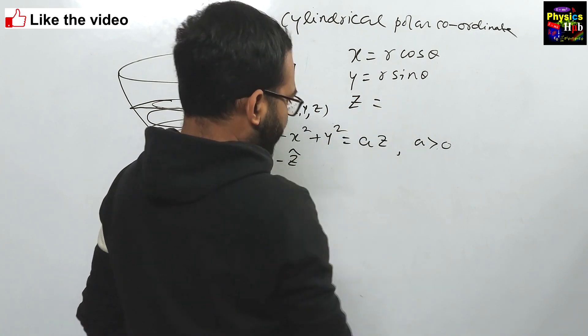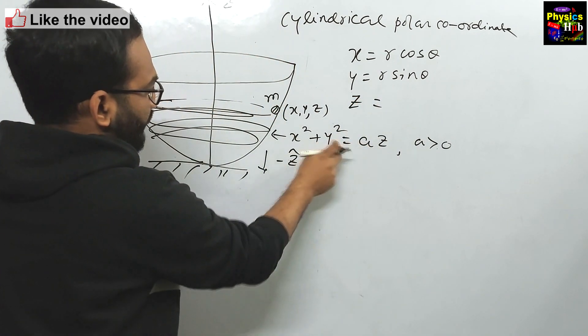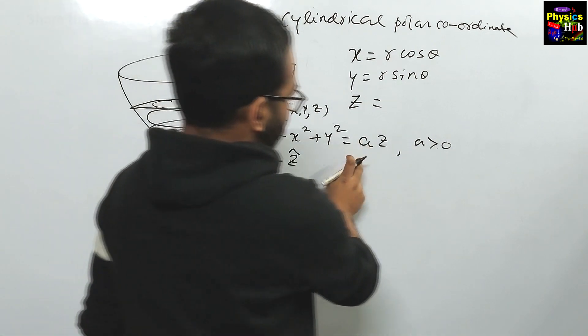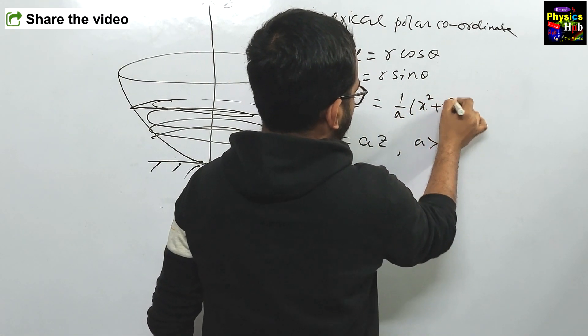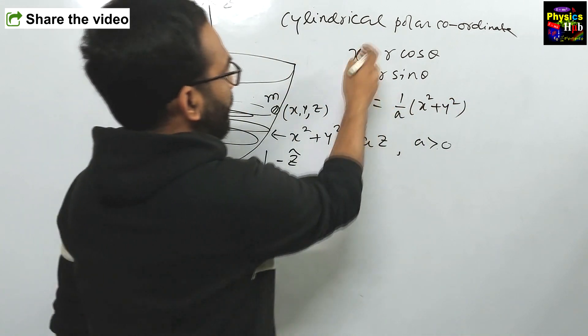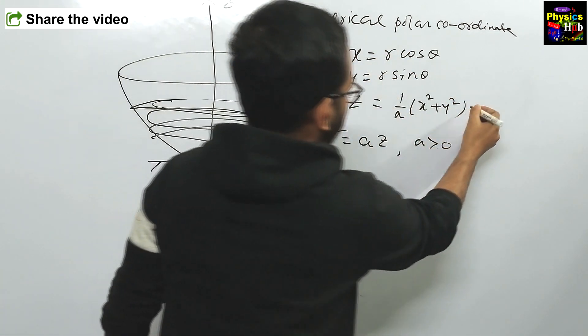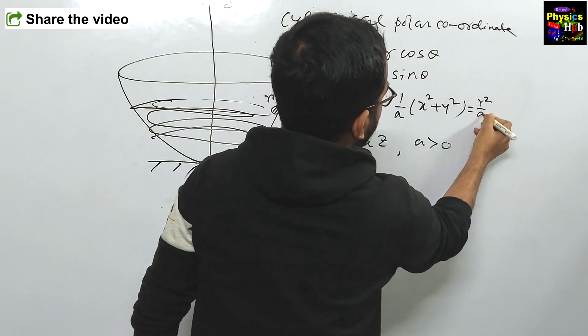Z in the question given, z is equals to x square plus y square by a. So 1 by a times x square plus y square. X square plus y square you can see r square. So it is basically r square upon a.